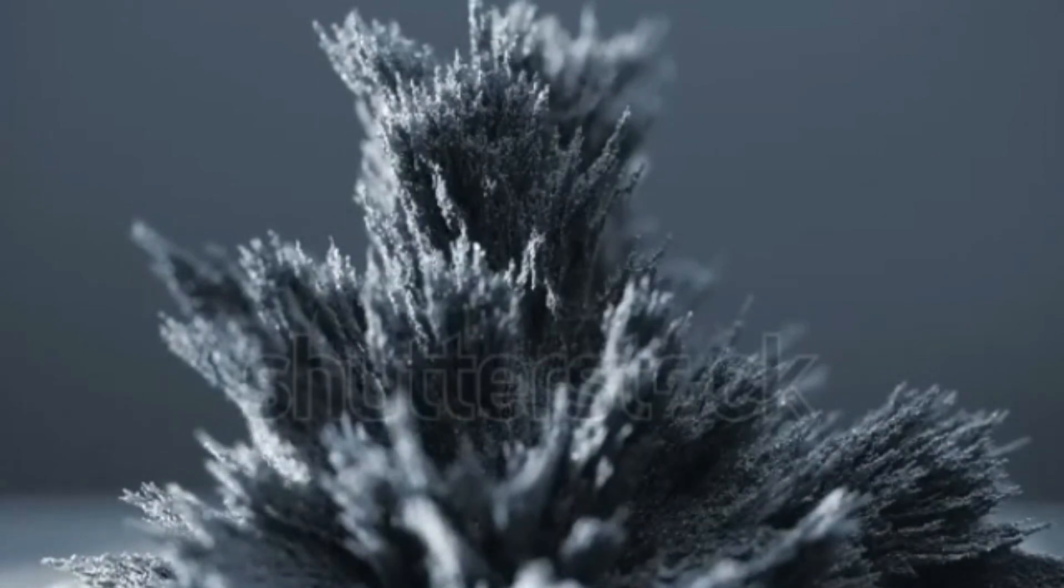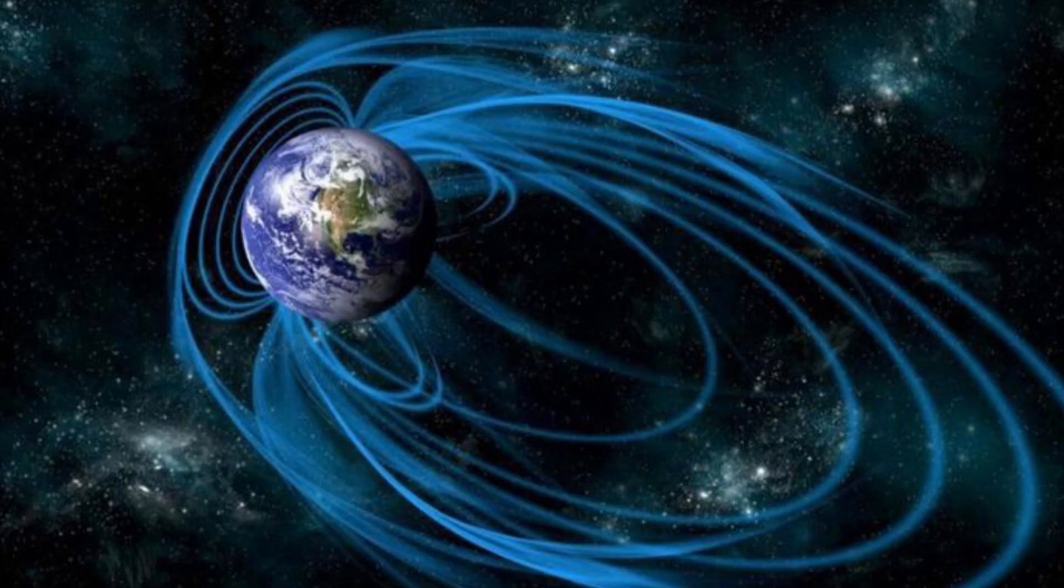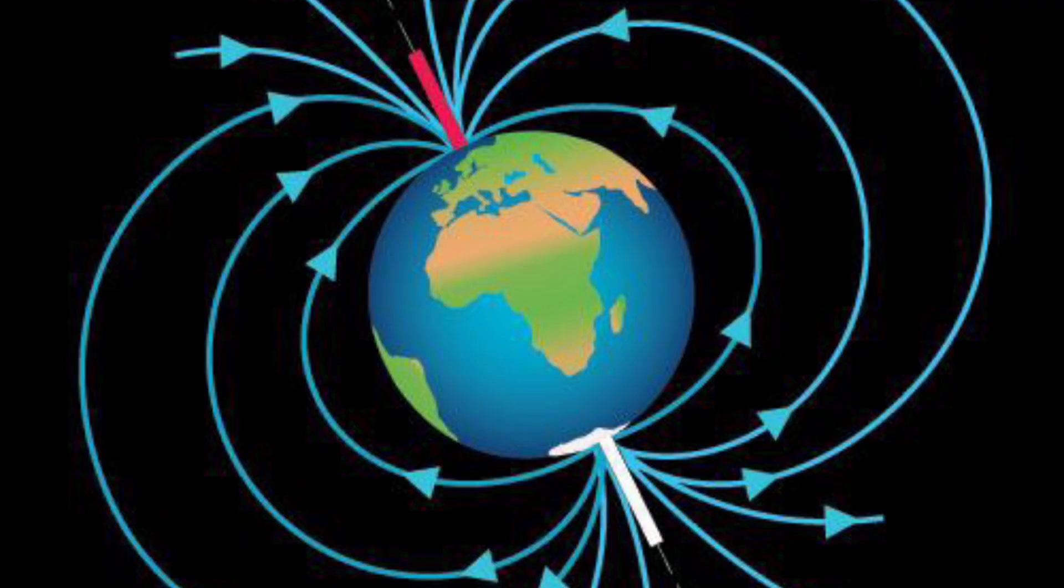The space or region around a magnet within which any influence can be felt by another magnet is called magnetic field. A magnetic field is represented by a series of lines around a magnet.